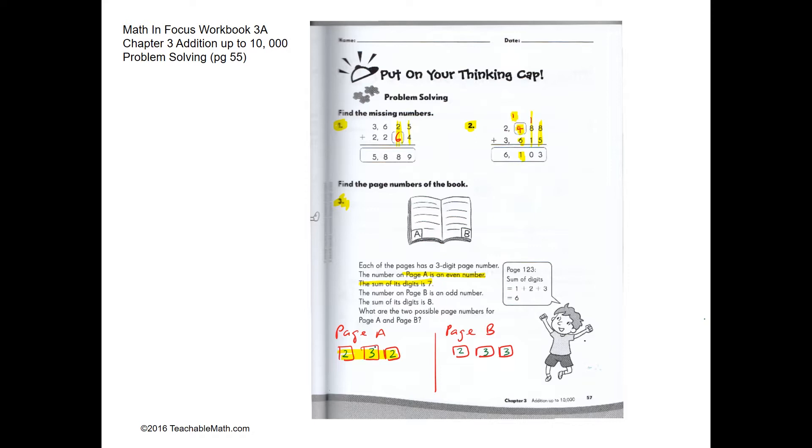So if the page number for page A is 232, page B has to be one more, which is 233. Let's check: is the sum of 2 and 3 and 3 equal to 8? Yes. Is it an odd number? Yes.